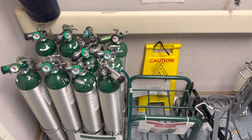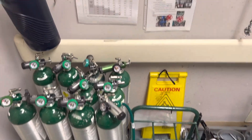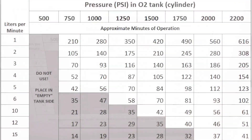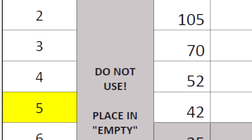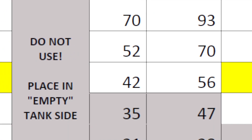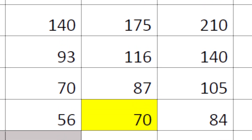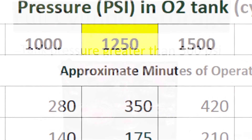So you've decided you need to use an oxygen tank to transport your patient. First, consult the oxygen tank duration table to determine your O2 needs for the trip. Locate the liters per minute that you'll use and the expected duration of the trip to determine how much PSI you'll need.